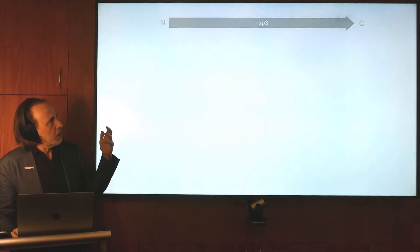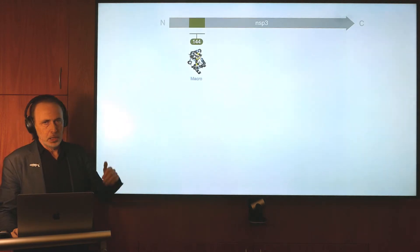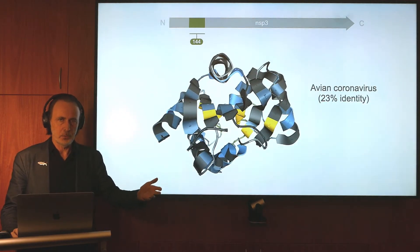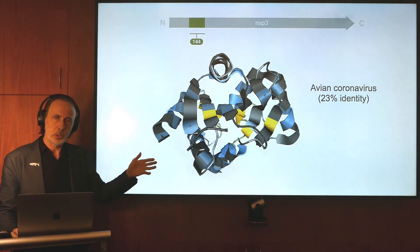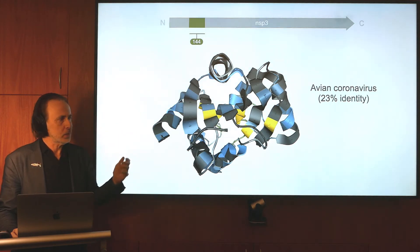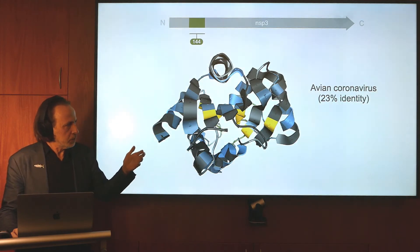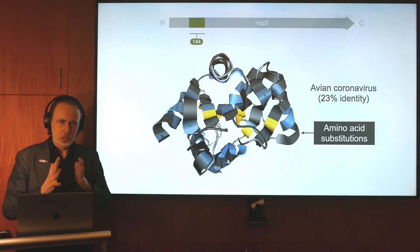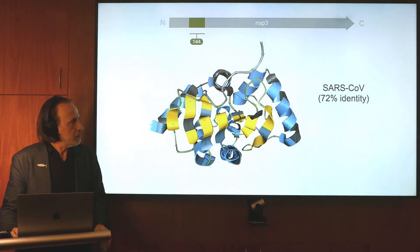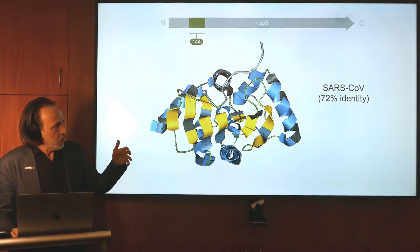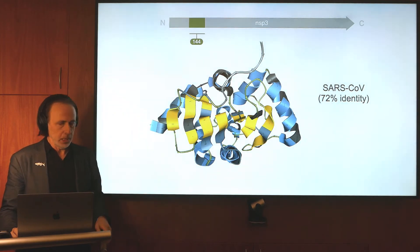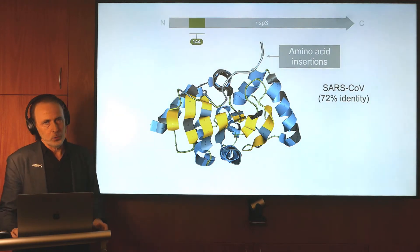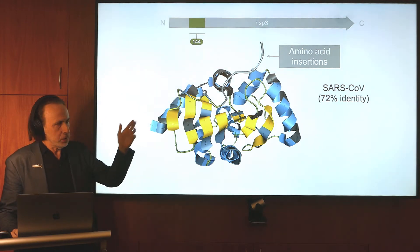In NSP3, our analysis found a region called the macro domain that had 144 matching structures. Many of these matching structures were the structures of related viral proteins. Most of the structures we'll be looking at are going to be different from the actual COVID-19 sequence. To be clear about these differences, we highlight every amino acid residue position where there's a substitution with a dark gray coloring. Across most of the proteome, the best structures derive from the SARS virus, which is a better model to the COVID-19 sequence. This structure also contains an insertion — a region of the sequence not present in COVID-19 — which we highlight with light gray coloring.